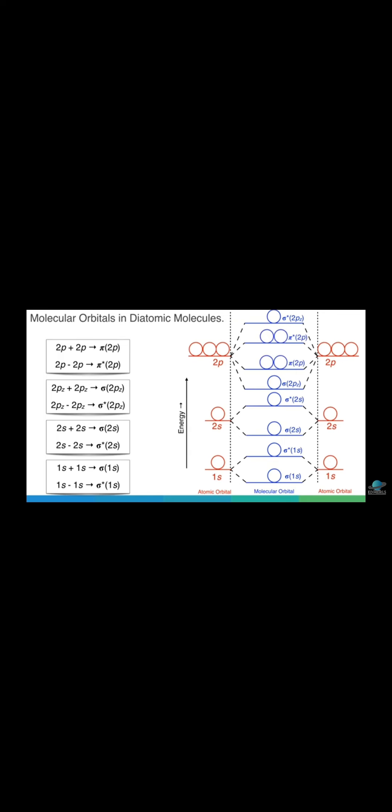Star stands for anti-bonding molecular orbital. When p atomic orbitals are combined, four molecular orbitals are developed: sigma Pz, pi Px, pi Py, pi star Px, pi star Py, and sigma star Pz. When we go from 1s to 2p, the energy increases.